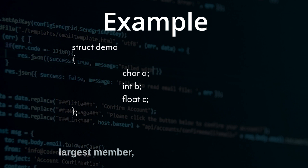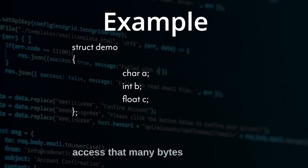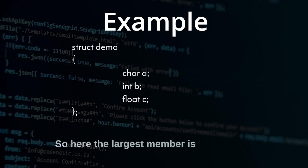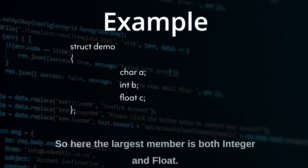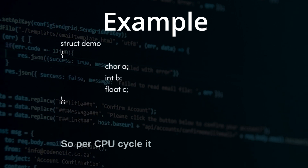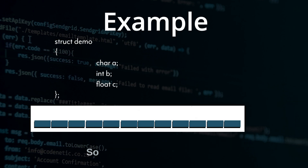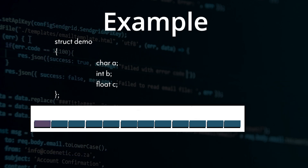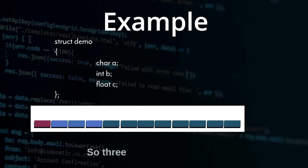In structure padding, it will look for the largest member, and per CPU cycle it can access that many bytes of memory. Here the largest member is both integer and float, so per CPU cycle it will get four bytes of memory. While allocating memory for the character member it requires only one byte, but per CPU cycle it already accesses four bytes, so three bytes are left empty.